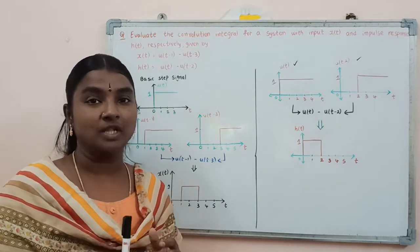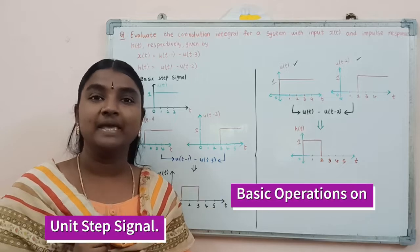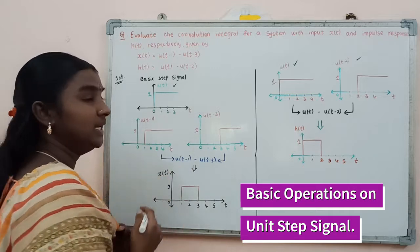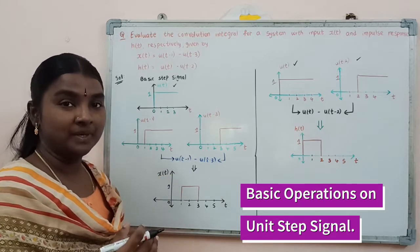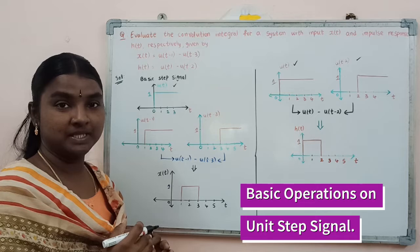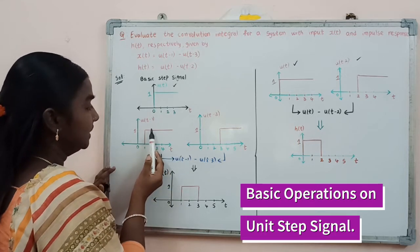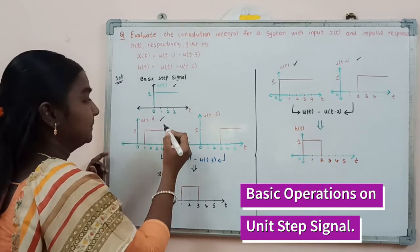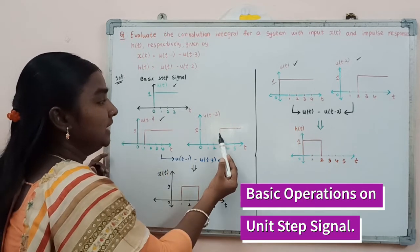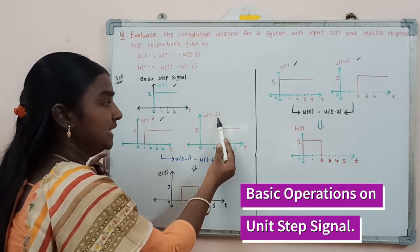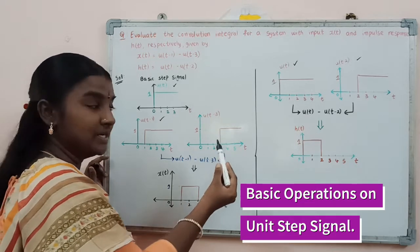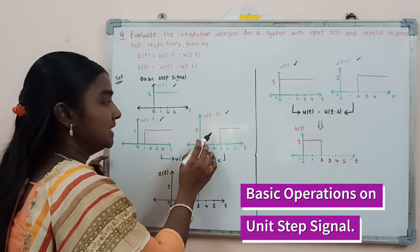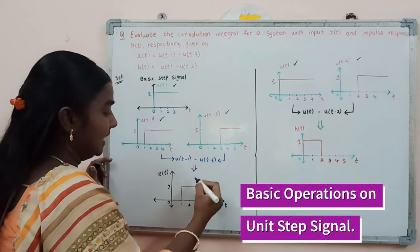Before going to solve this problem, firstly we need to consider the basic step signal. This is the step signal waveform u(t). By doing a time delay shifting operation by time instant 1, we find u(t-1), and by doing a delayed time shifting operation by time instant 3, we find u(t-3). By doing a subtraction operation between these two signals, we find the x(t) signal.